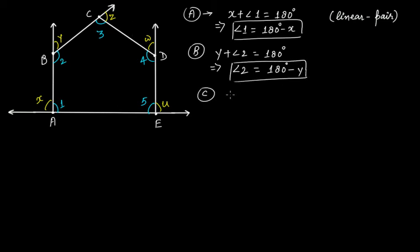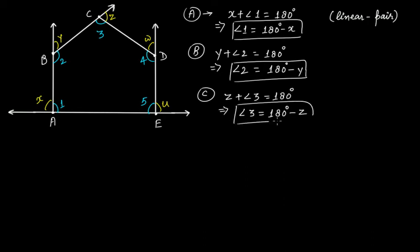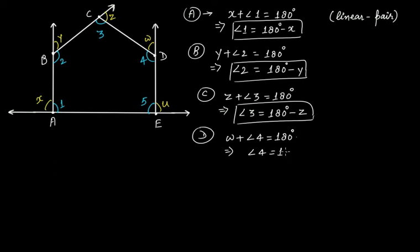From vertex C, Z plus angle 3 is equal to 180 degrees, and from here you get angle 3 as 180 degrees minus Z. From vertex D, W plus angle 4 is equal to 180 degrees, and from here you get angle 4 as 180 degrees minus W.